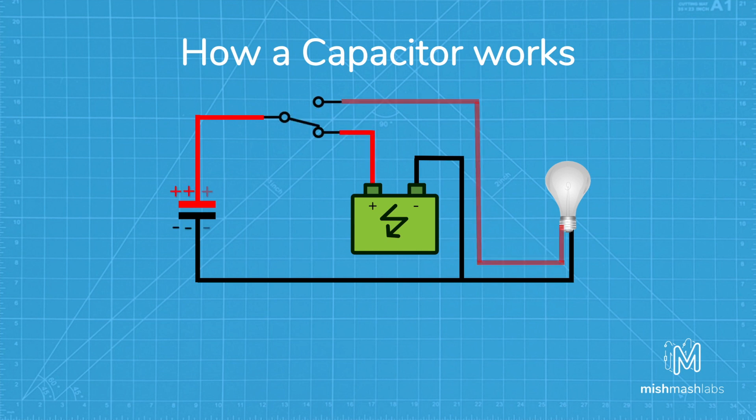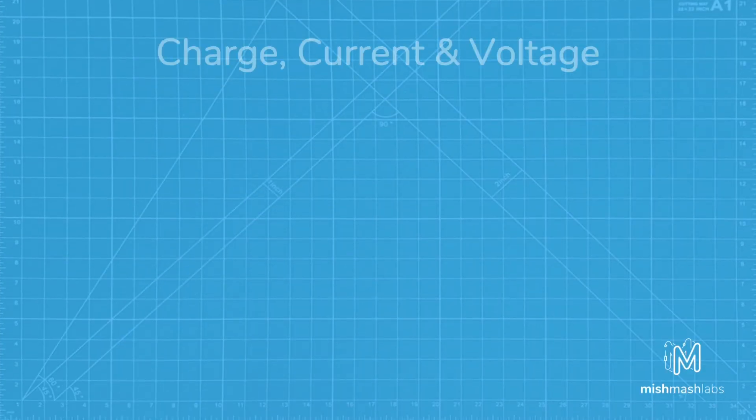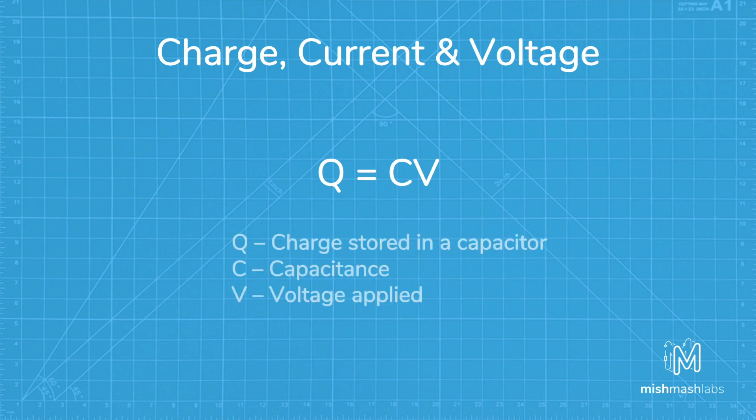A capacitor's capacitance, or how many farads it has, can tell you how much charge it can store. How much charge a capacitor is currently storing depends on the potential difference or voltage between its plates. The relationship between the charge, capacitance, and voltage can be modeled as the equation q equals cv,